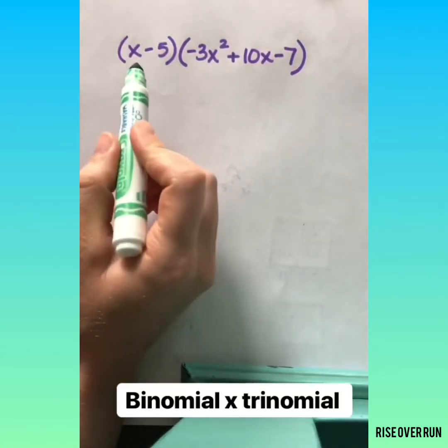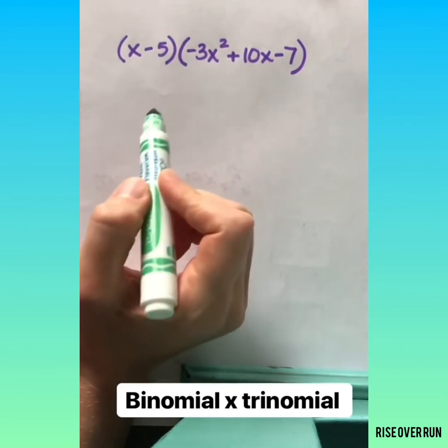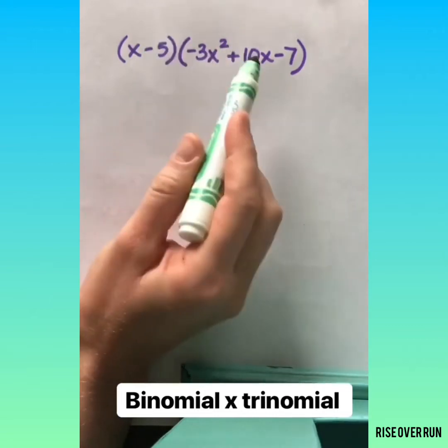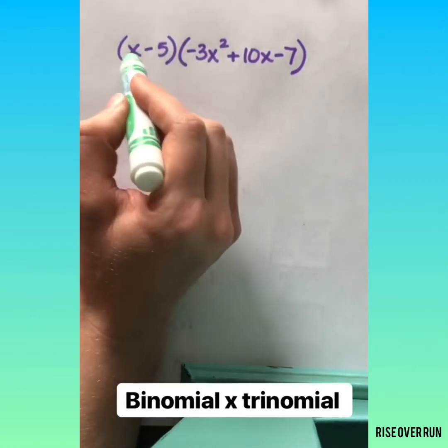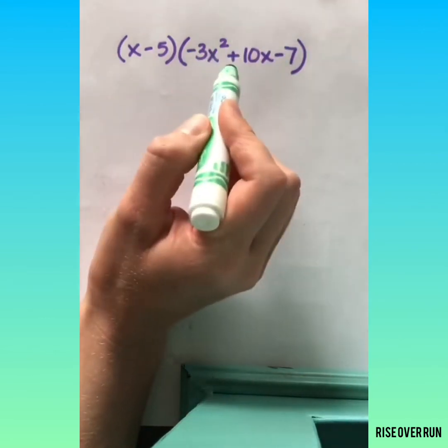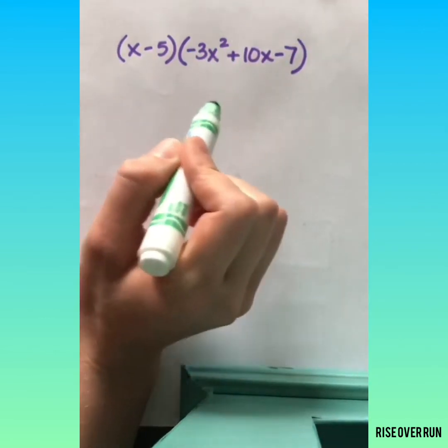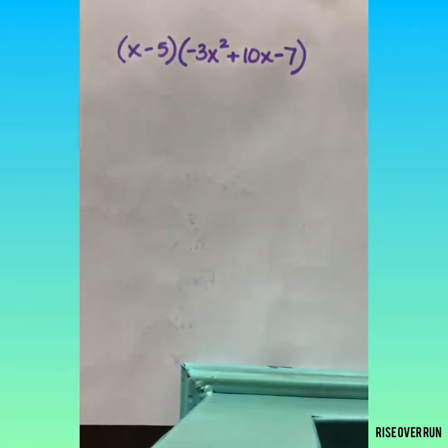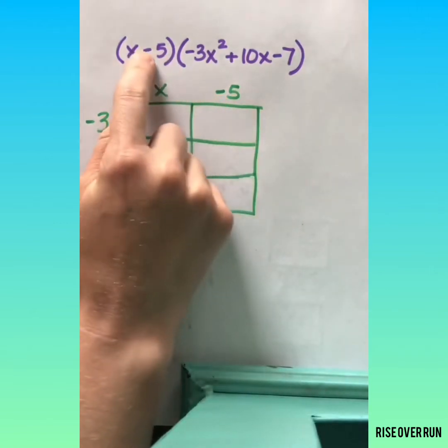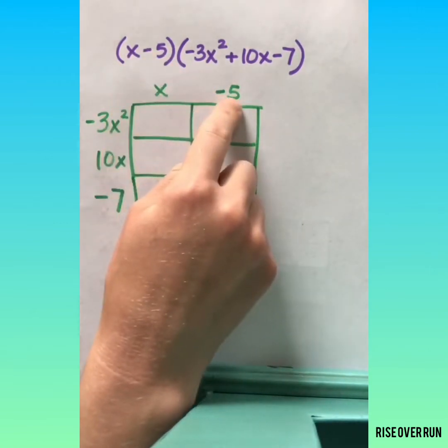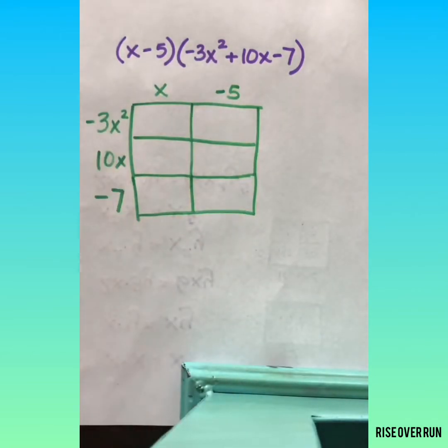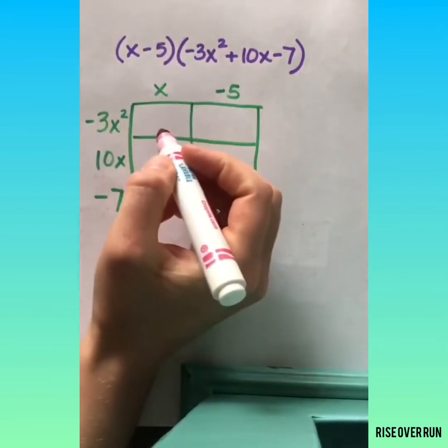What about when you're multiplying a binomial times a trinomial? FOIL doesn't really work here because it doesn't have all the letters we need in order to multiply everything. But you can still distribute if you can keep up with multiplying everything in the first polynomial by everything in the second polynomial. I'm going to do an area model to help us keep track of everything. Okay, here I set up one of the polynomials. Notice that I keep the sign with the term that follows it. And then I set up each term of the second polynomial.